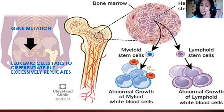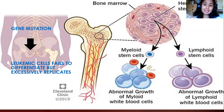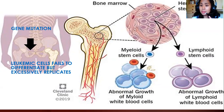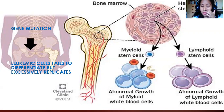Leukemic cells stay in the immature stage — they cannot mature. But they do have the capacity to replicate excessively. This immature cell doesn't mature, yet it keeps copying and replicating itself, accumulating more and more immature cells.